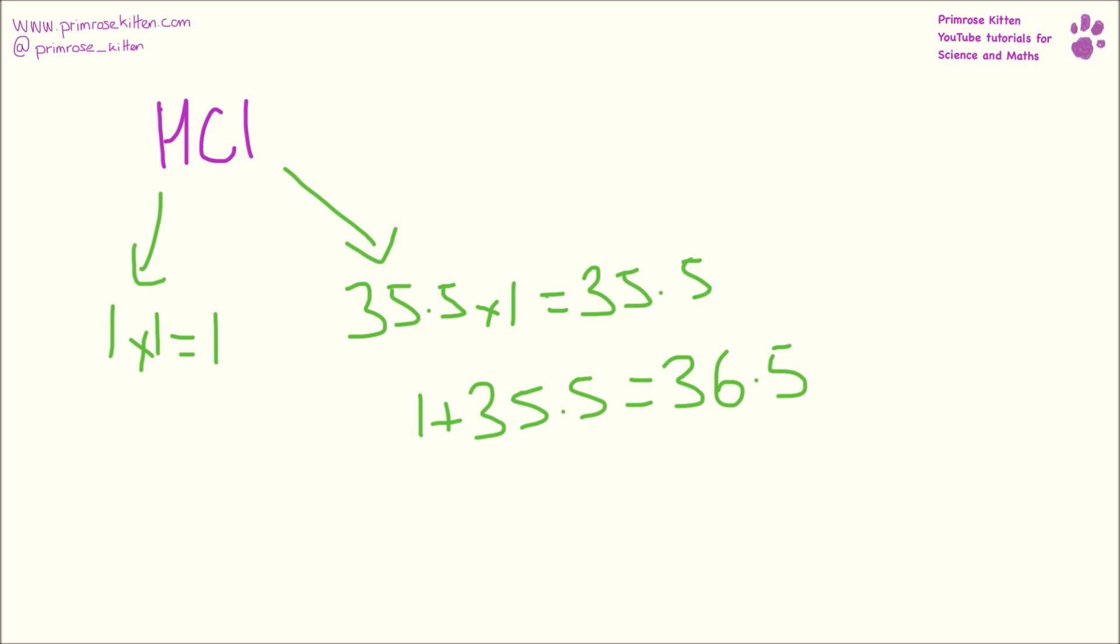we are going to get a total mass of 36.5. If we wanted to work out the mass of hydrogen in this, we would take the total mass of hydrogen, which is one, divide that by the total mass, which is 36.5, times it by 100, which will give us an answer of 2.7%.